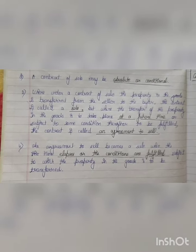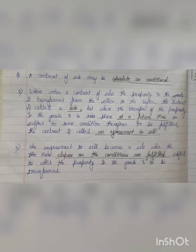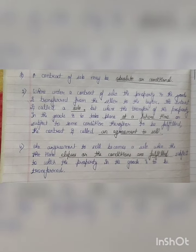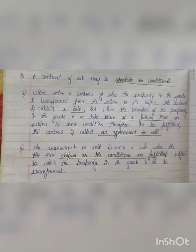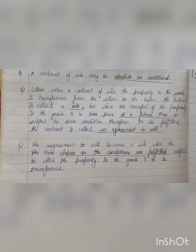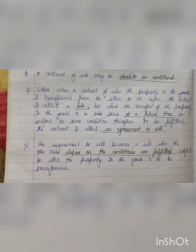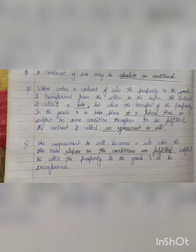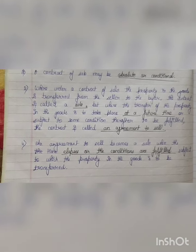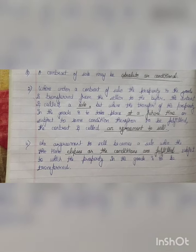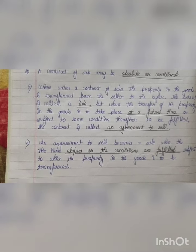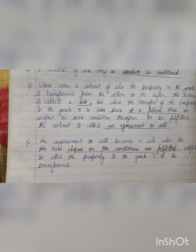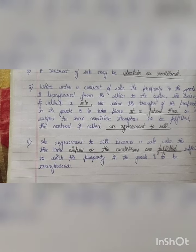This is subsection 3: where under a contract of sale the property in the goods is transferred from the seller to the buyer, the contract is called a sale. Where the property in the goods is to take place at a future time, or subject to some condition thereafter to be fulfilled, the contract is called an agreement to sale.